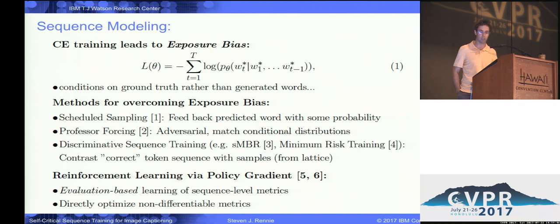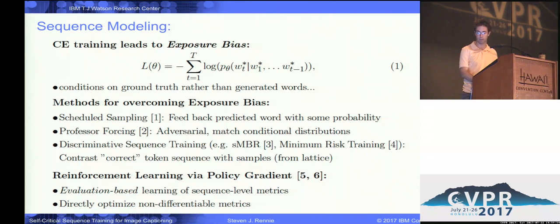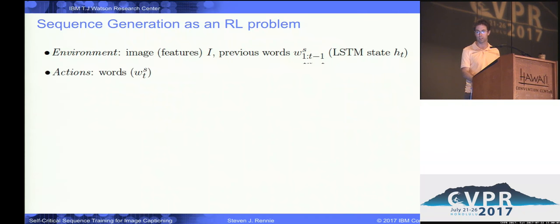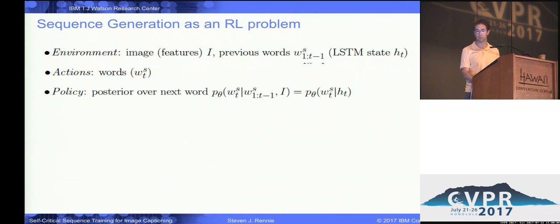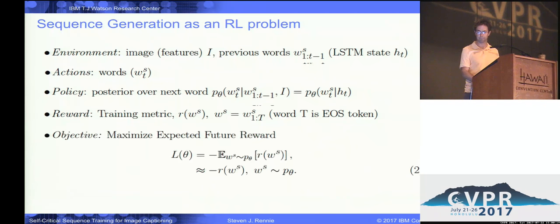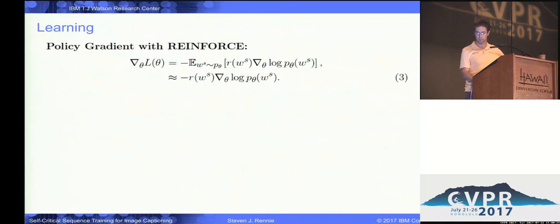This is a great approach because it's evaluation-based — essentially the system can explore alternative explanations and try to find better ones, and we can optimize non-differentiable metrics directly. If we treat this as an RL problem, the environment would be our image features and previous words that we've generated. The actions are words, and our policy is the posterior over the next word, or in general the policy over sentences. The reward is our training metric, and our objective is to maximize expected future reward.